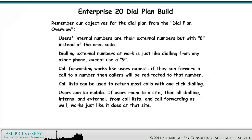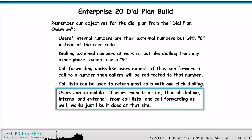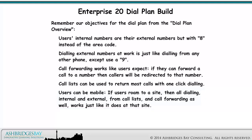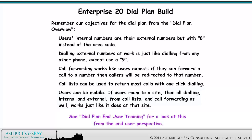Remember our objectives for the Dial Plan from the Discussion and Dial Plan Overview. In this drawing, we focus on the objective: users can be mobile. If users roam to a site, then all dialing, internal and external, from call lists, and call forwarding as well, works just like it does at that site. See Dial Plan End User Training for a look at this from the end user perspective.